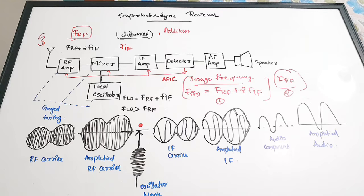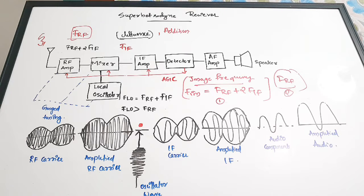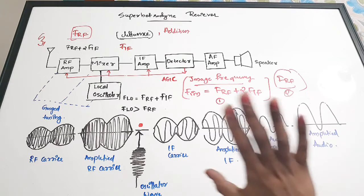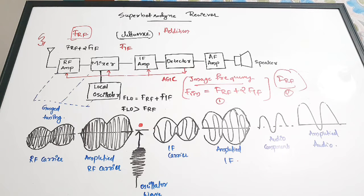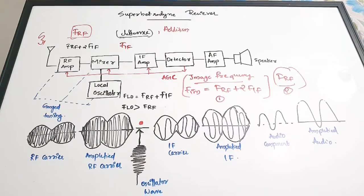In this video we discussed the super heterodyne receiver, its waveforms, ganged tuning and its importance, automatic gain control, and image frequency. These are the basics of the super heterodyne receiver. A separate video on numericals will be uploaded, as at least one question from this area appears in competitive examinations. If you found this video useful, please give it a thumbs up, share it with your friends, and subscribe to the channel. Thanks for watching.